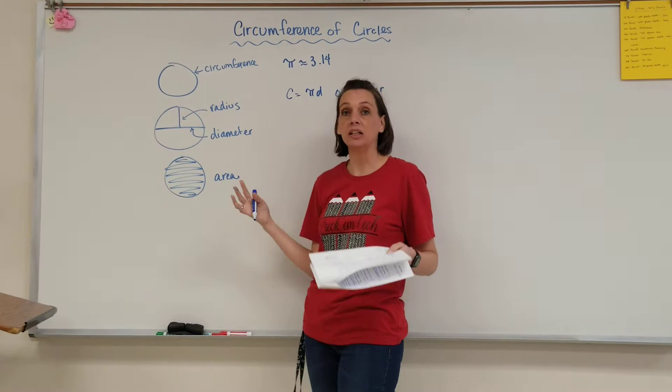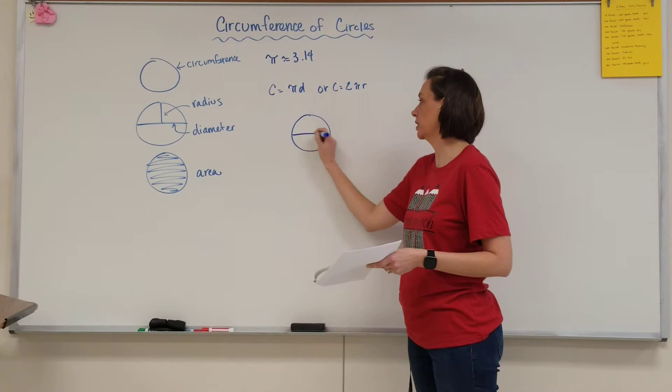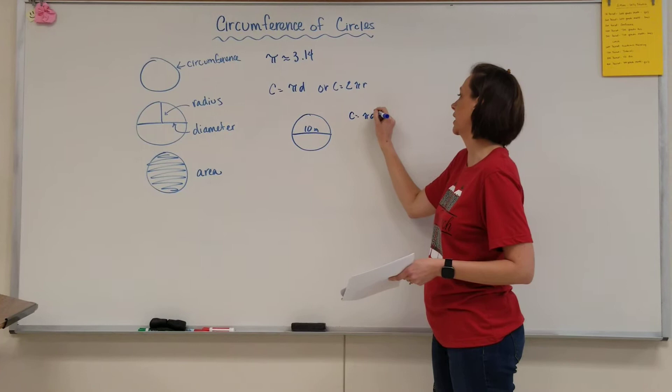So let's do a couple of finding the circumference. You're going to have to be very careful about what you're given. In this first one where it says all the way across is 10 meters. All the way across is our diameter.